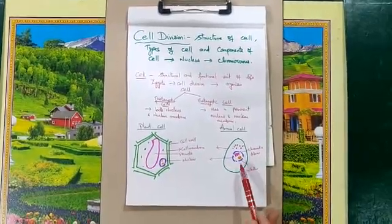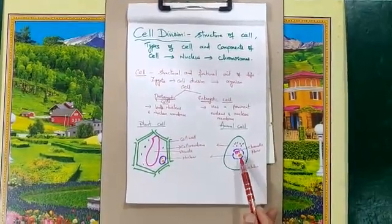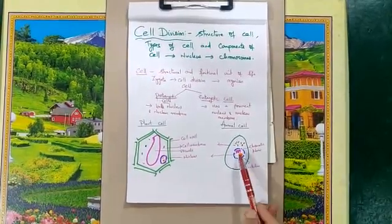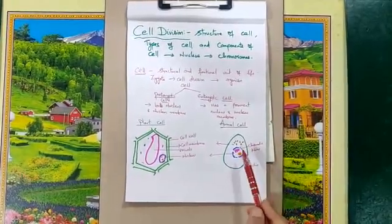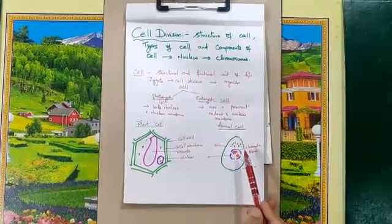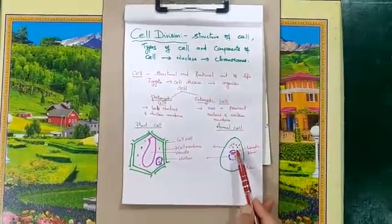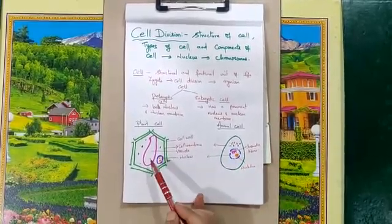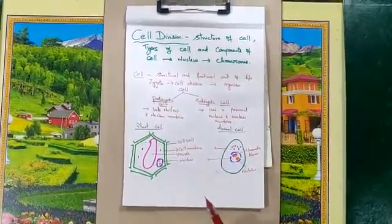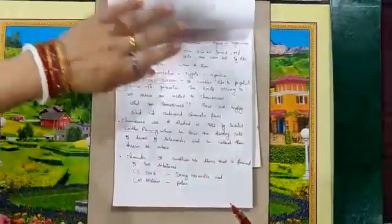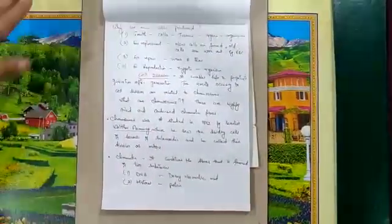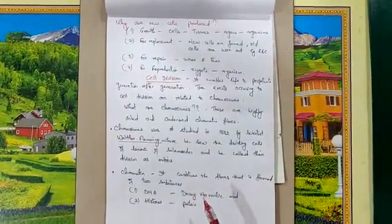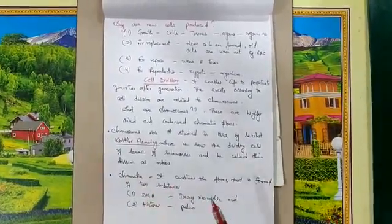An animal cell is oval in shape, filled with cytoplasm. It contains a nucleus in the middle with a nucleolus and chromatin fibers. In an animal cell, there is a centrosome which splits to form centrioles, which is missing in a plant cell.